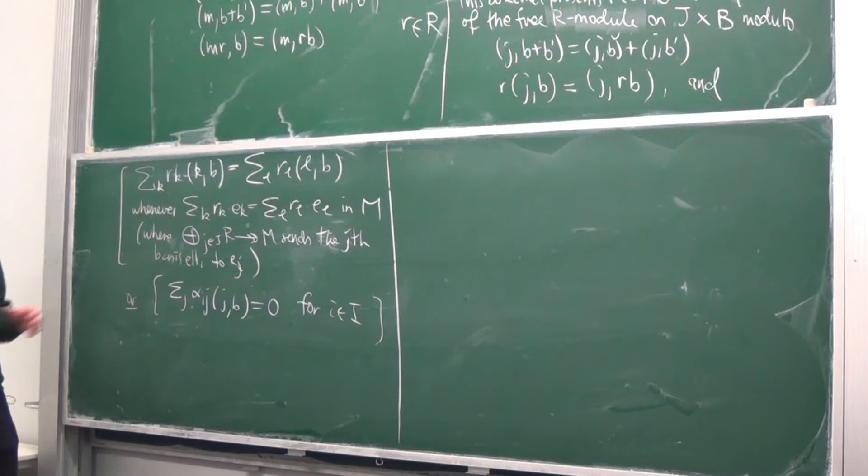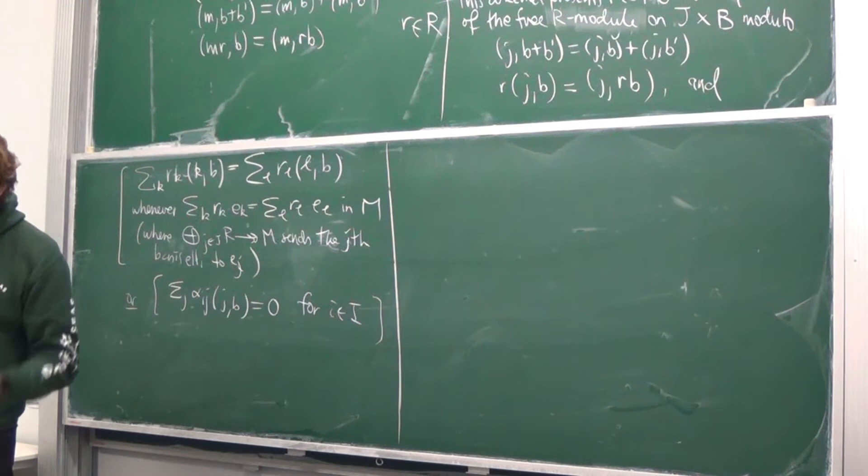Why shift our point of view from the bilinear-map presentation to this cokernel one? It's because this is more congruent with the point of view on tensor products as extensions of a functor to colimit-preserving functors, and it's that categorical point of view which most easily generalizes to the non-additive setting of topoi.